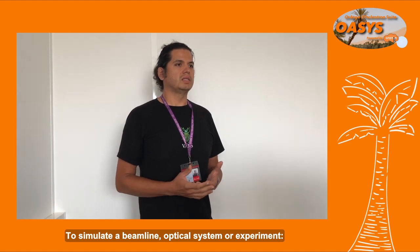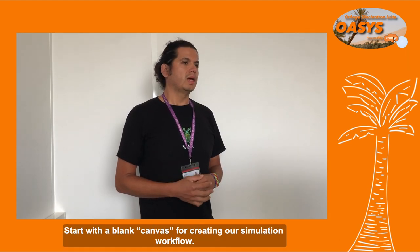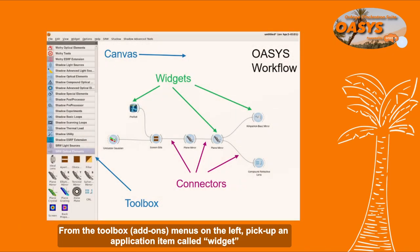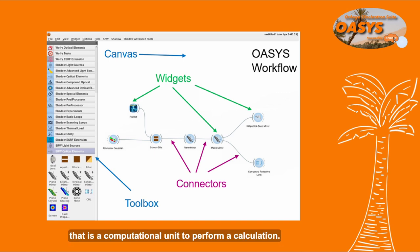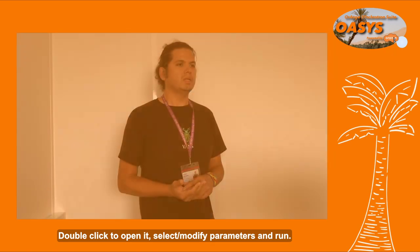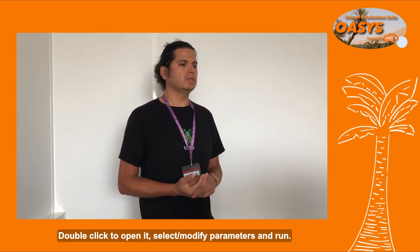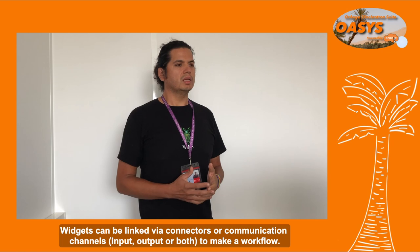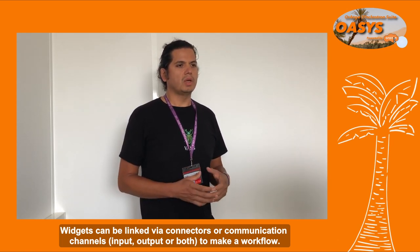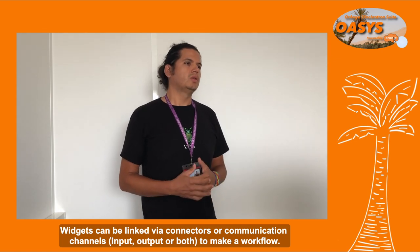To simulate a beamline, optical system, or experiment, start with a blank canvas for creating your simulation workflow. From the toolbox or add-ons menu on the left, pick an application item called a widget — a computational unit to perform a calculation. It represents sources and optical elements as an active visual element. Double-click to open it, select and modify the parameters, and run. Widgets can be linked via connectors or communication channels — input, output, or both — to make a workflow, with data such as the photon beam passing through the channels visible as wires.